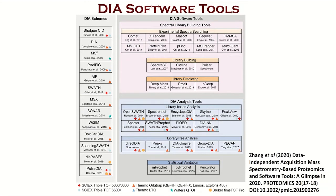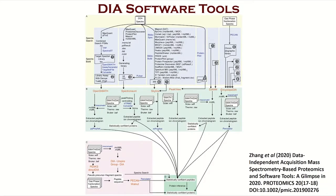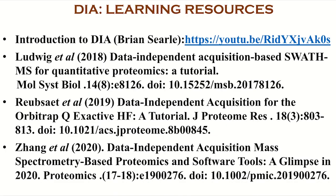Software tools for implementing DIA data analysis can be broadly divided into two classes depending on the need for a spectral library or library-free approaches. These include software such as OpenSwath, Spectronaut, Encyclopedia, DIA-NN, DIA-Umpire, and Pecan. For a more comprehensive and current understanding of the status of bioinformatics for DIA analysis, readers are recommended to read the following manuscripts and video materials.